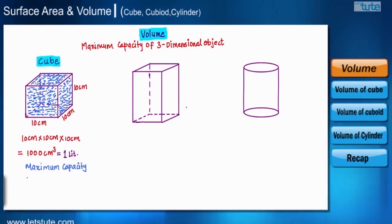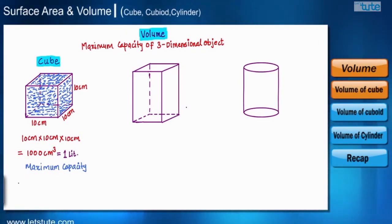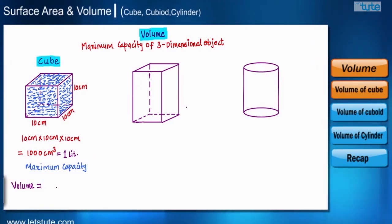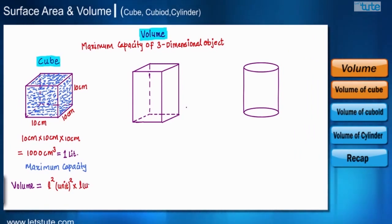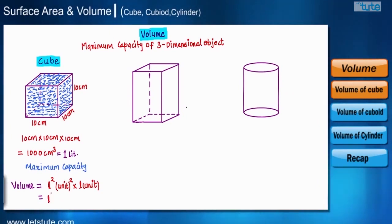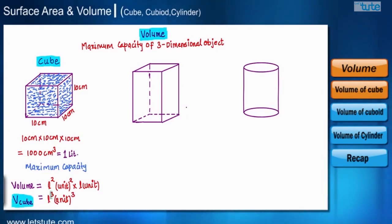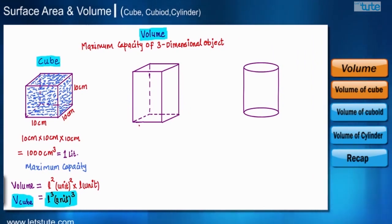Now let's write the general formula for the volume of any cube. If a cube has side length l, the area of the base is l squared, and the height is also l. Multiplying the area of the base by the height gives l squared × l = l cubed. So the general formula for the volume of a cube is l³ unit cubed.